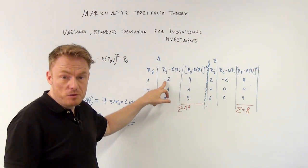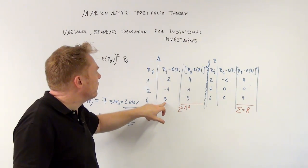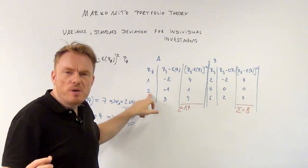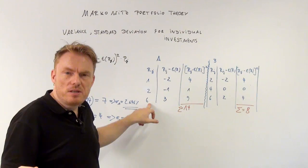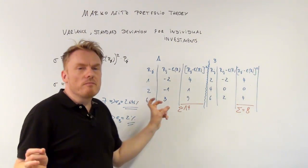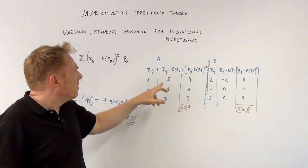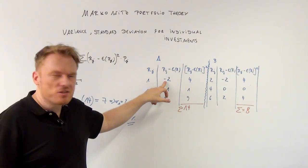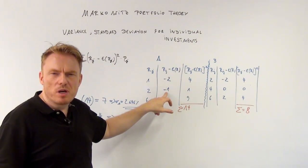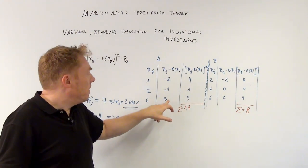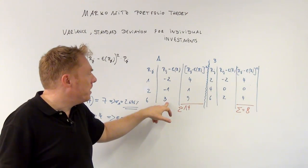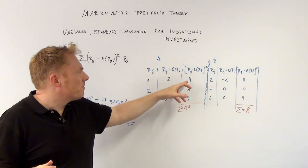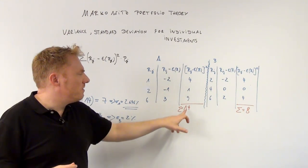We subtract three percent from each month: one minus three is minus two, two minus three is equal to minus one, six minus three is equal to three. Then we square those numbers: minus two times minus two is equal to four, minus one times minus one is equal to plus one, three multiplied by three is equal to nine. The sum of those squares — four plus one plus nine — is equal to fourteen.